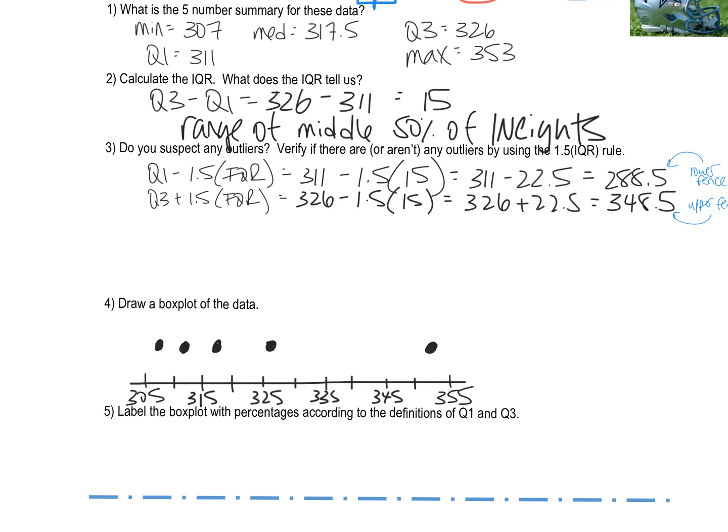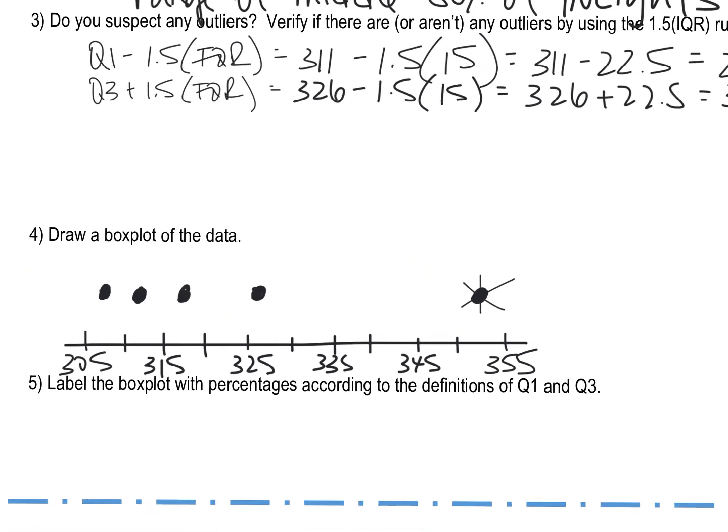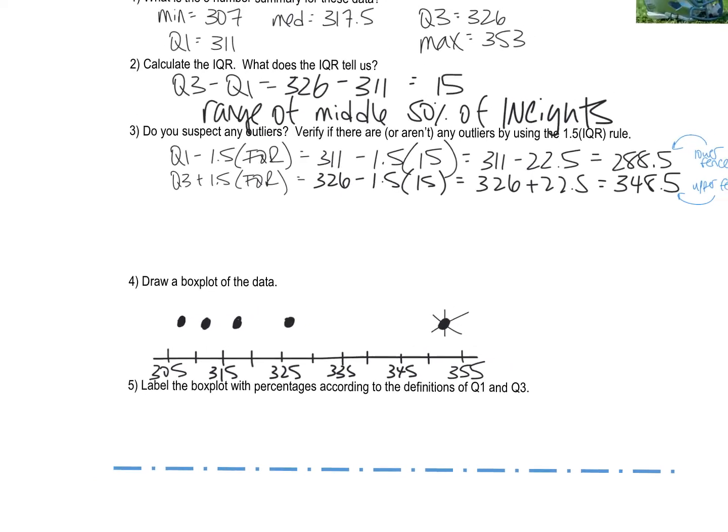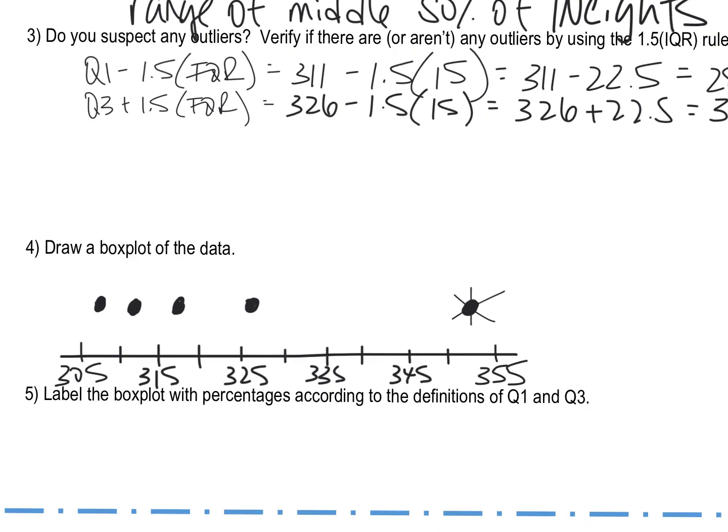But then remember, we decided that the maximum number was an outlier, because he was beyond my upper fence. So what I'm going to do is change that to an asterisk. And I'm going to put a dot at the next smallest number. So that doesn't change my minimum, or my maximum, excuse me. My maximum is still 353. Even though it's an outlier, he is the heaviest dude in this line, period. But my last dot is going to be at 338. So that goes right here.